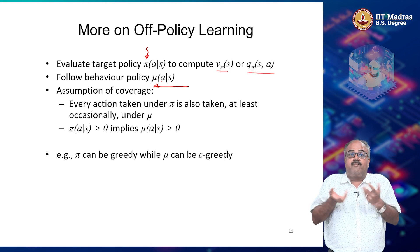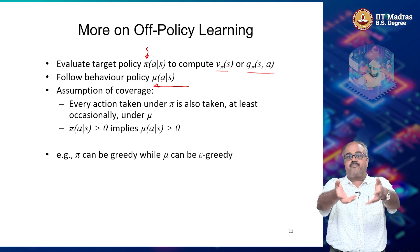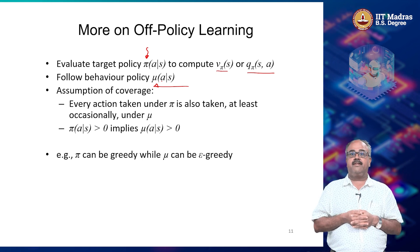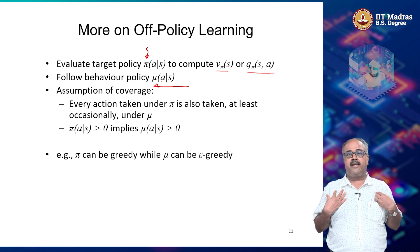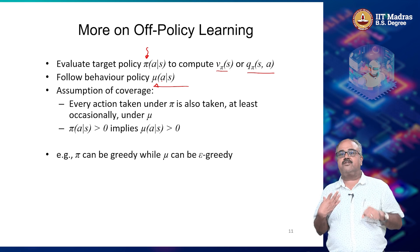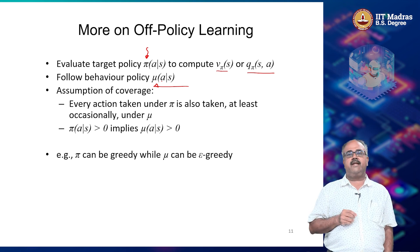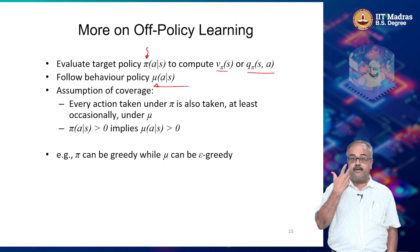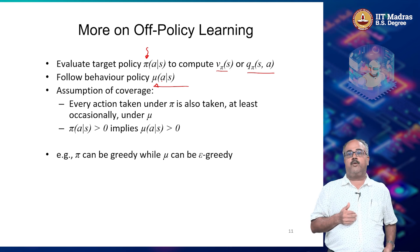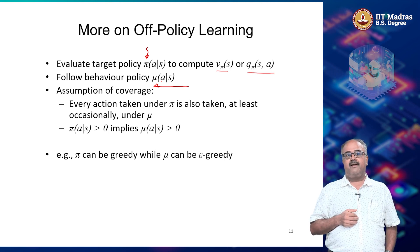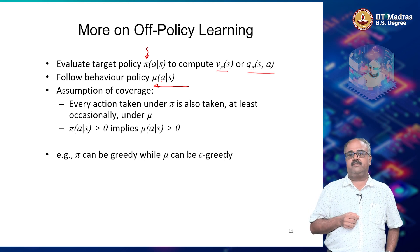There could be other cases where we use off-policy learning — for example, where you are observing somebody else behaving in the world, but you want to learn about a specific policy pi, and you do not yet have access to the world. Another agent is actually generating samples in the world and you are observing those samples, but you still want to learn about pi. In such a case, you can use this kind of off-policy learning.